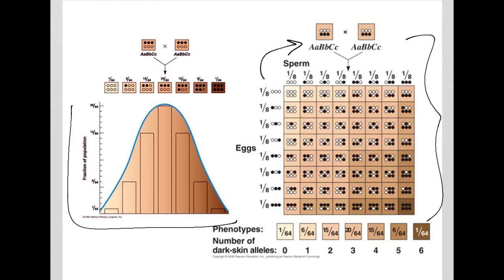And so, for example, this is giving an example of possibly skin color being composed of three genes. Therefore, six total alleles. Lots and lots of different things going on there.